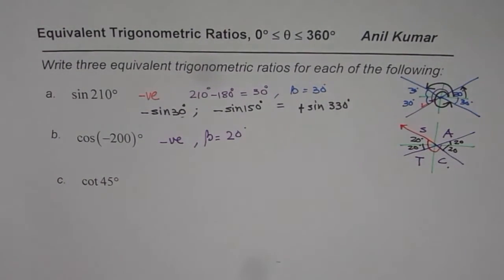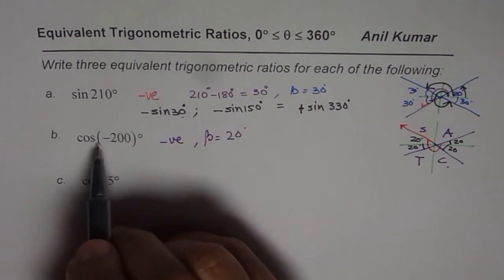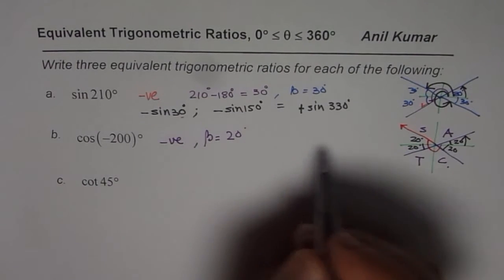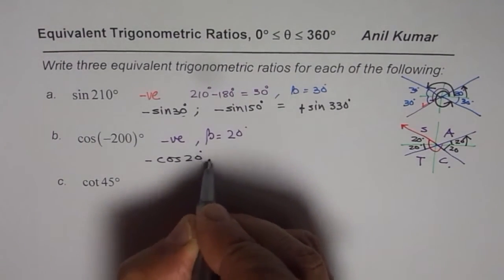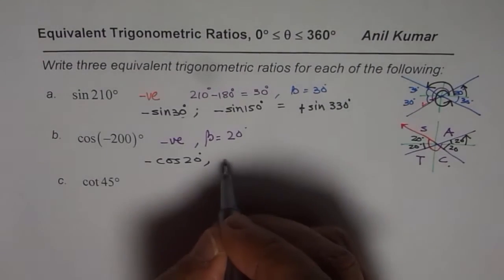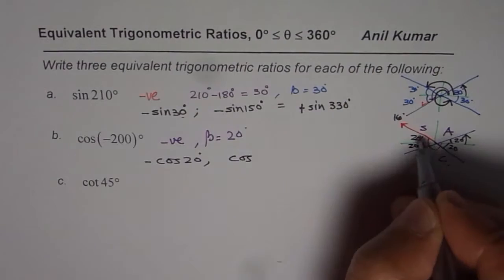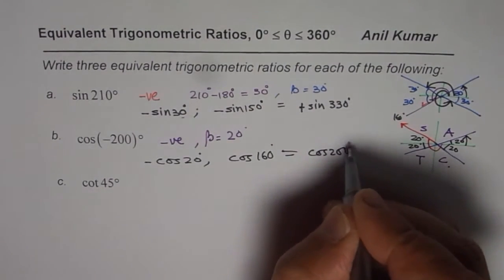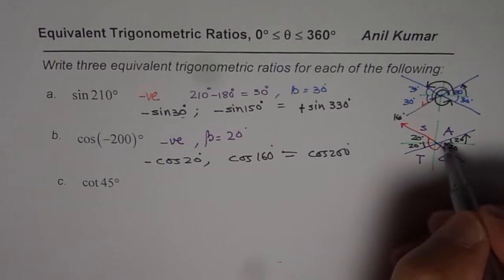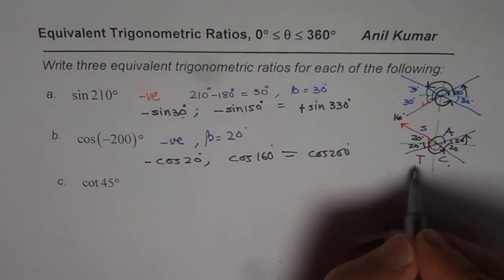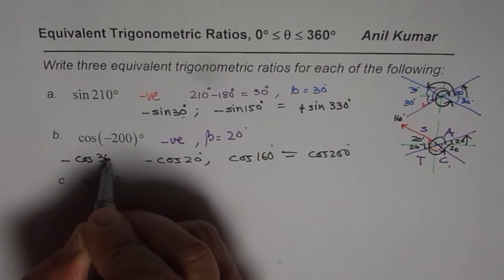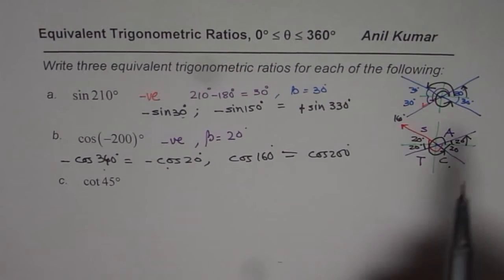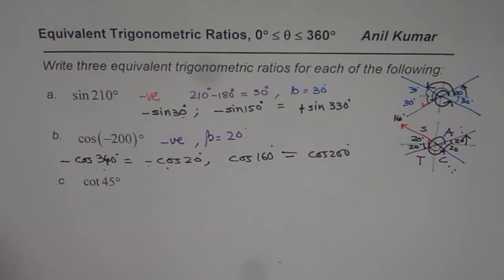Based on this, we can quickly write all our answers. In quadrant 1, cosine is positive but we need a negative solution, so we write negative cos of 20 degrees. In quadrant 2, cosine is negative, so the answer is cos of 160 degrees (180 minus 20). In quadrant 3, the angle is 180 plus 20 — that is cos of 200 degrees, which is also negative. In quadrant 4, cosine is positive, so we write minus cos of 340 degrees (360 minus 20) to make it negative.